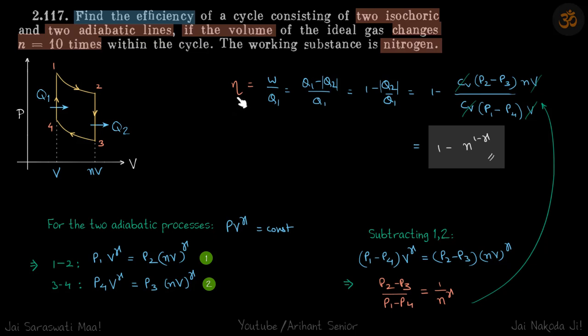Let's start by writing the efficiency as work done by the gas divided by q1. Why q1? Because in the process from point 4 to 1, heat is taken in by the system, and heat is released elsewhere. So efficiency is work upon heat taken in, w by q1.